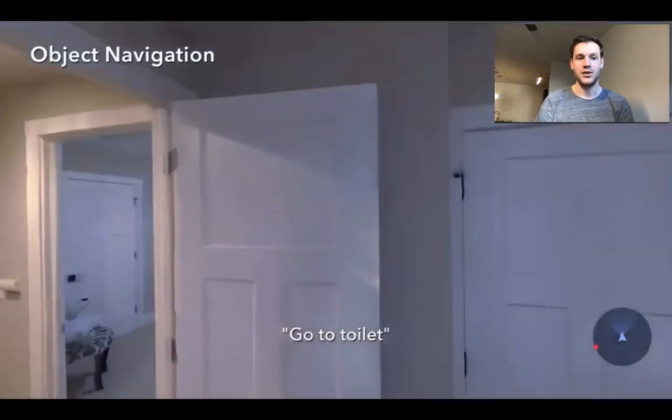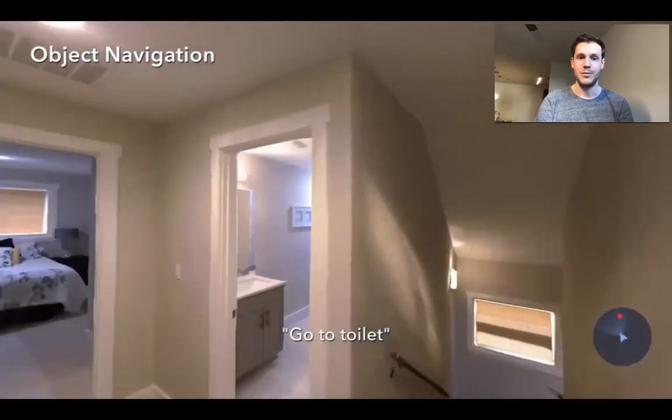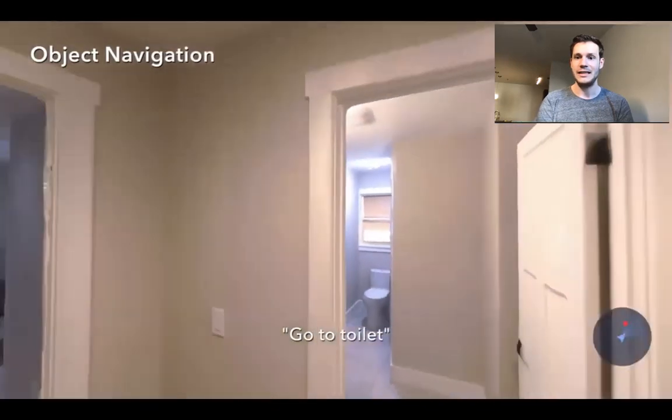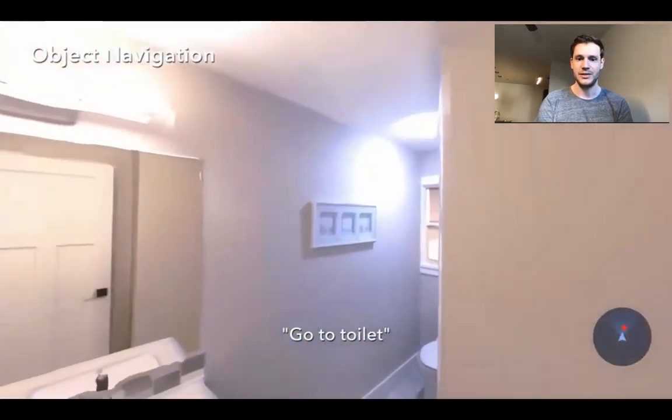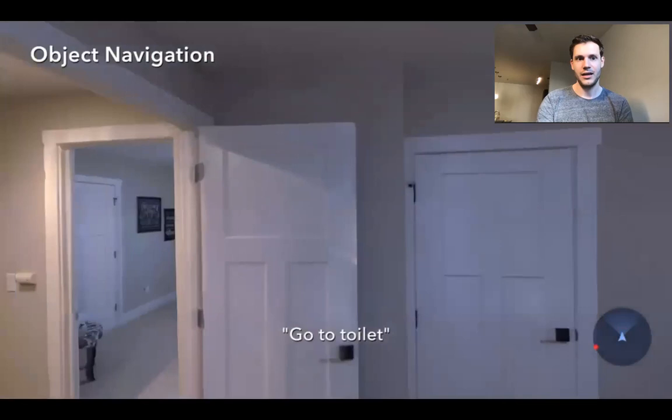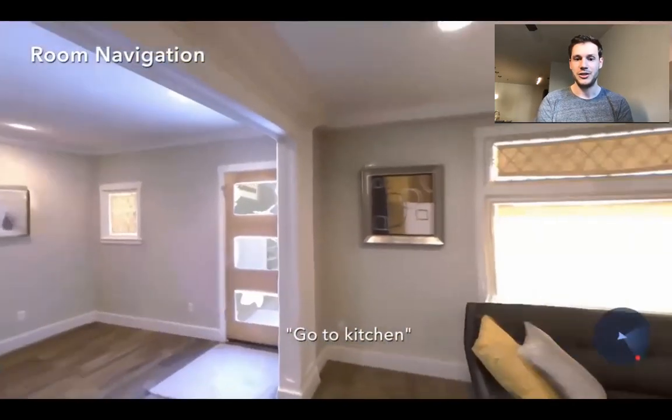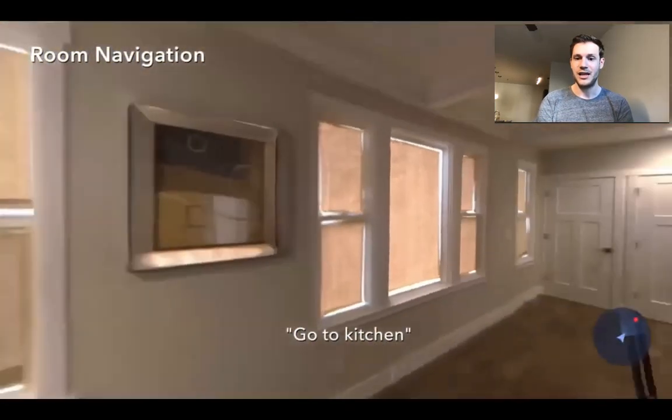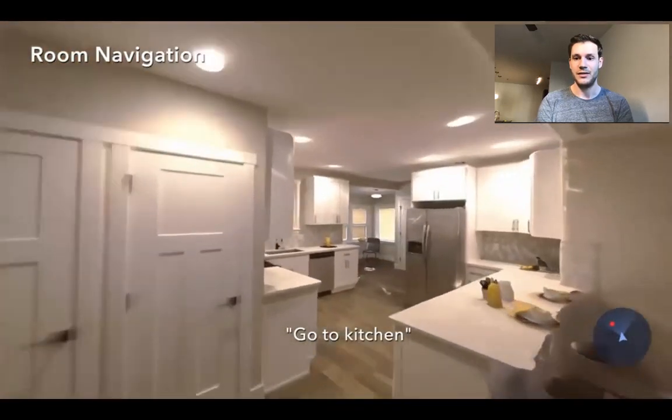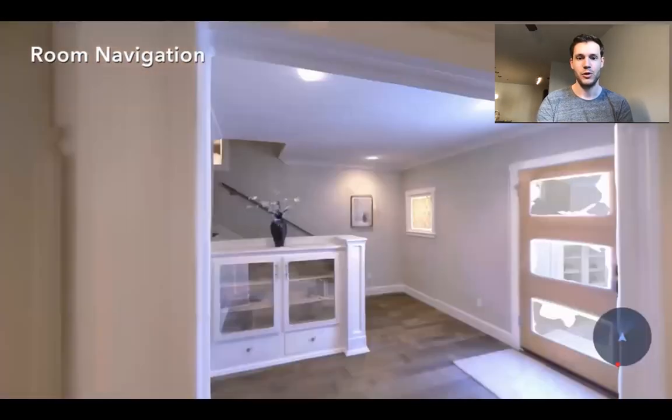Next is object goal navigation where the agent is given the name of an object and is tasked with finding an instance of that object in the environment. And then we have room goal navigation where the agent is given the name of a room and tasked with navigating to an instance of that room in the environment like kitchen in this example.